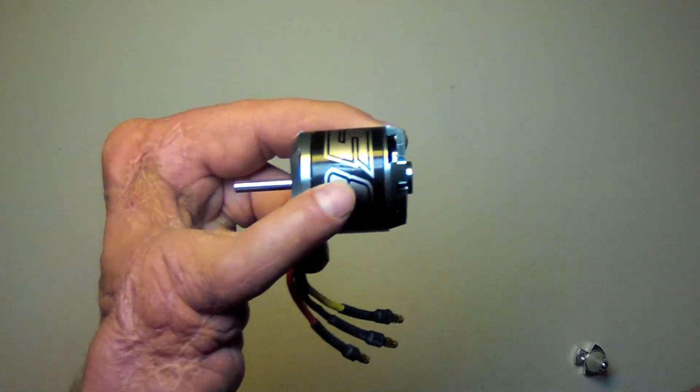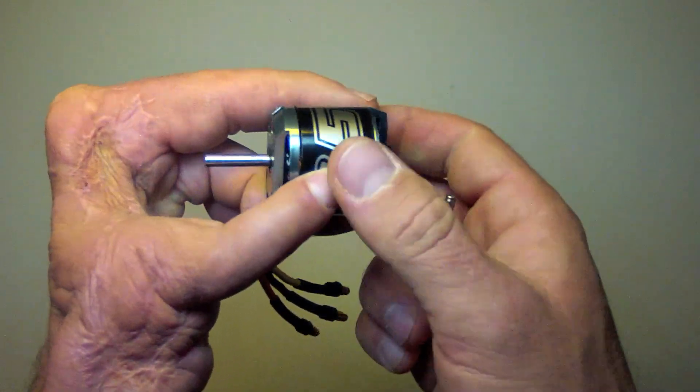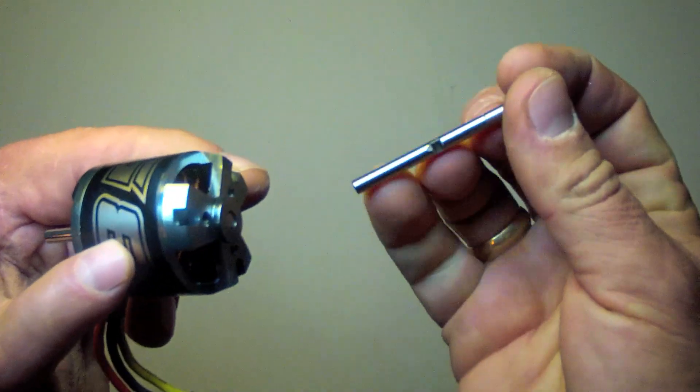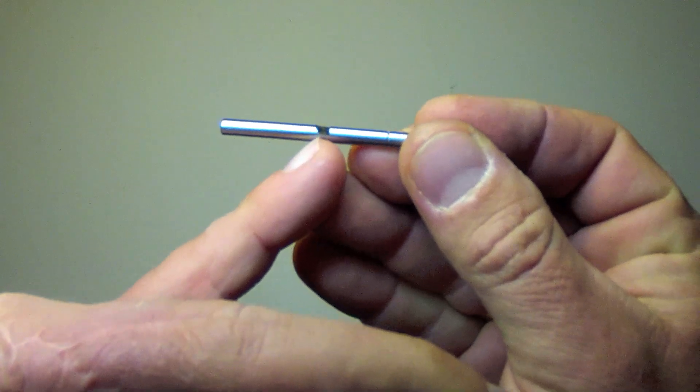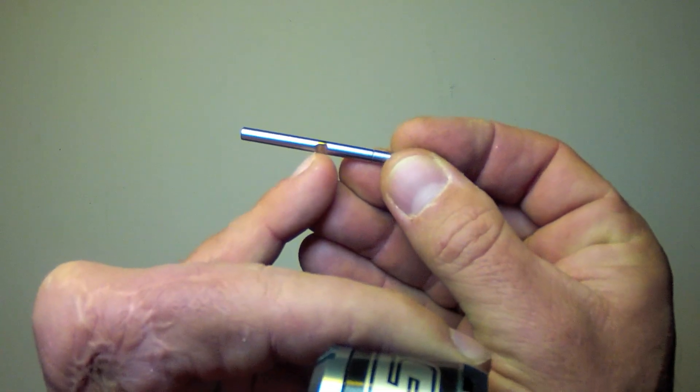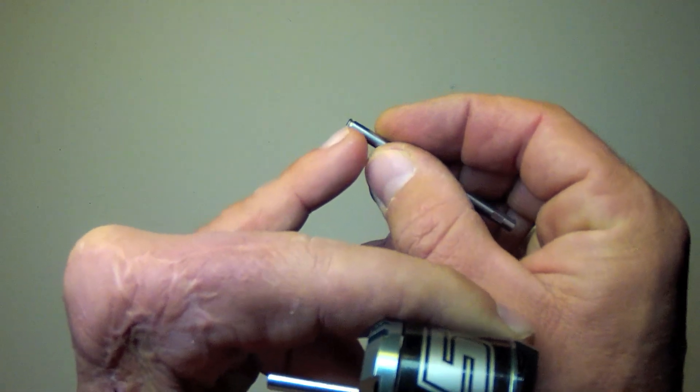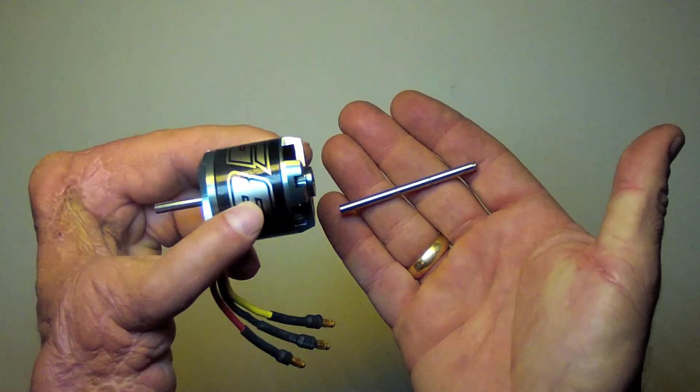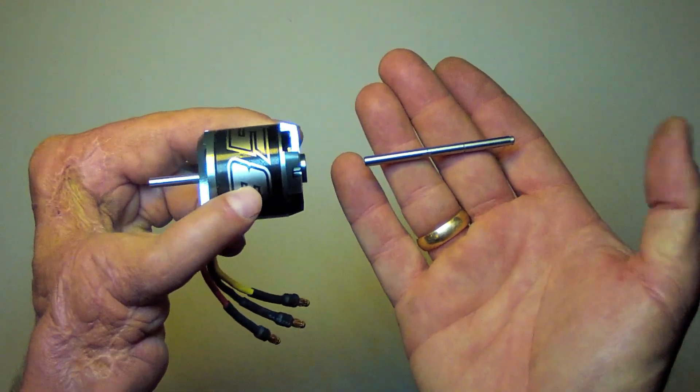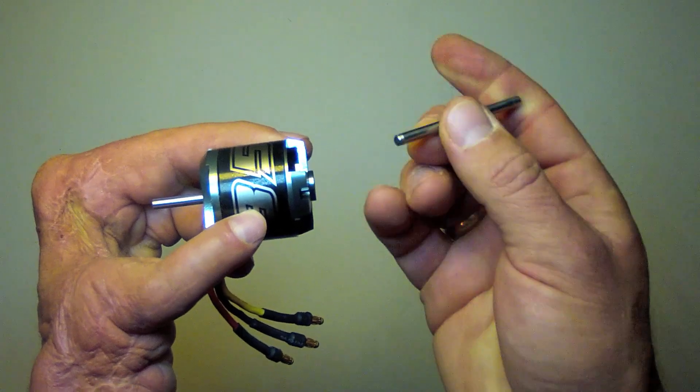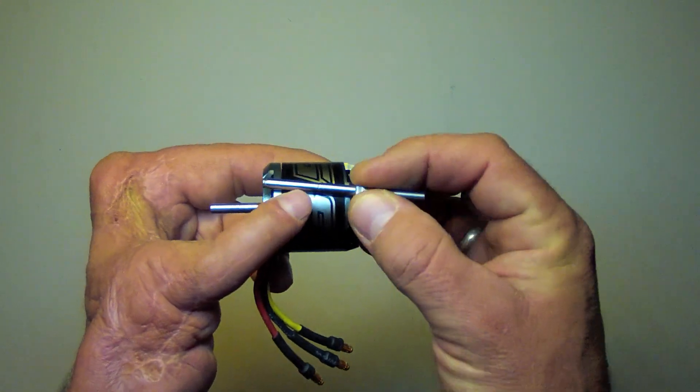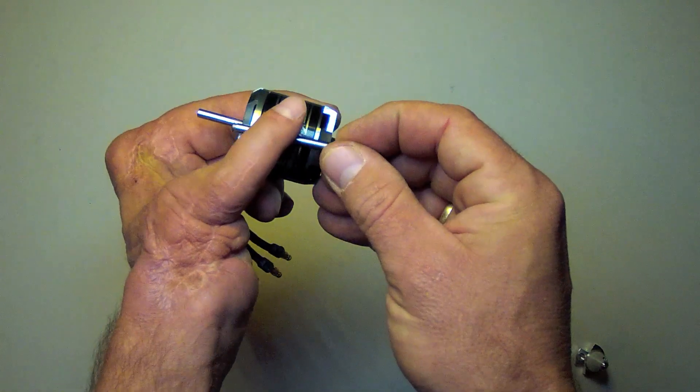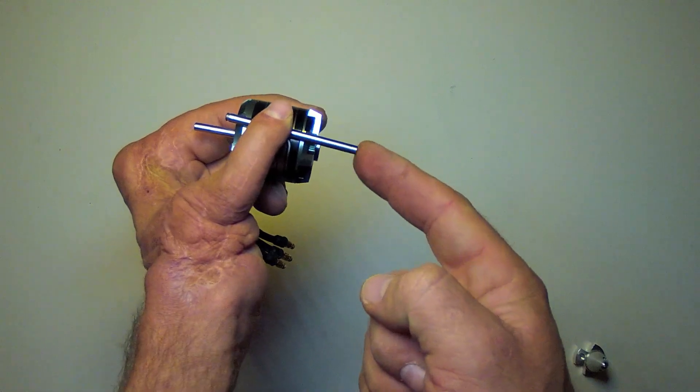A third option is to either buy a separate shaft or remove this shaft and mill into it the landing spot for the set screw and also groove out for the E-clip. This just requires a drill and a Dremel and a little bit of finesse and technique, but it can be done and this shaft can be placed in the motor in this opposite configuration so that the propeller can be mounted on this side.